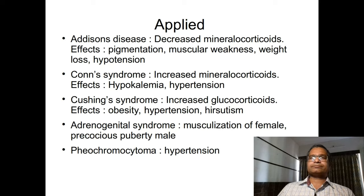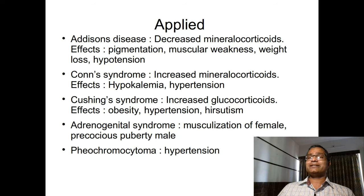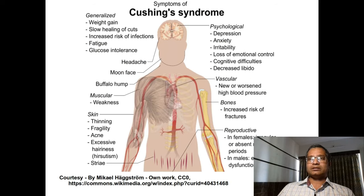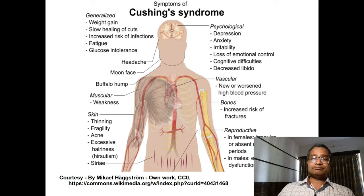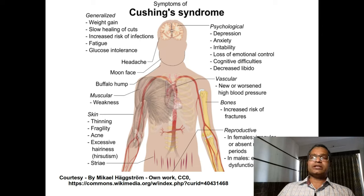Conn's syndrome involves hypertrophy of the cortex and increased secretion of mineralocorticoids — the exact opposite of Addison's disease. The increased secretion causes hypertension and hypokalemia due to increased loss of potassium from the body.